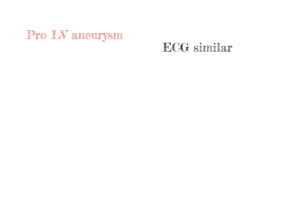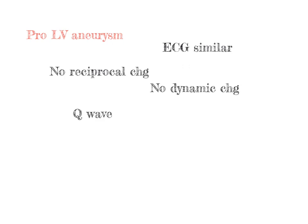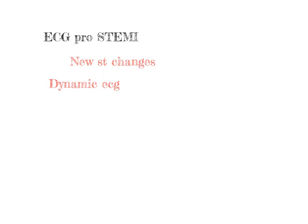Factors favoring left ventricular aneurysm include no dynamic ST changes, absence of reciprocal ST depression, and Q waves. Factors favoring acute STEMI include new ST changes, dynamic ECG changes, reciprocal ST depression, and high clinical suspicion of MI.